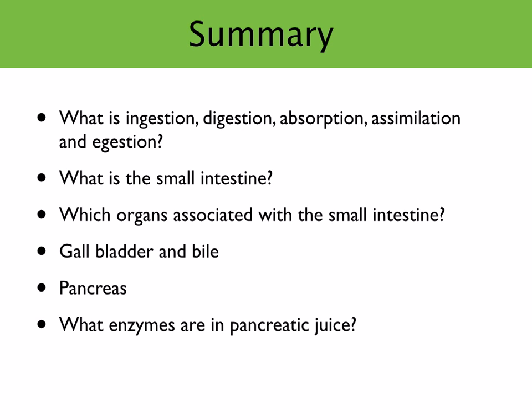Bile is made by the liver and stored in the gallbladder. It emulsifies fats so that the fat goes into droplets, making it easier for the enzyme lipase to break down the fat — it increases the surface area for the enzyme to work on the fat droplets. The pancreas releases pancreatic juice, which contains sodium hydrogen carbonate — this neutralizes the acid from the stomach — and the enzymes protease, lipase and pancreatic amylase. And that concludes our lesson.